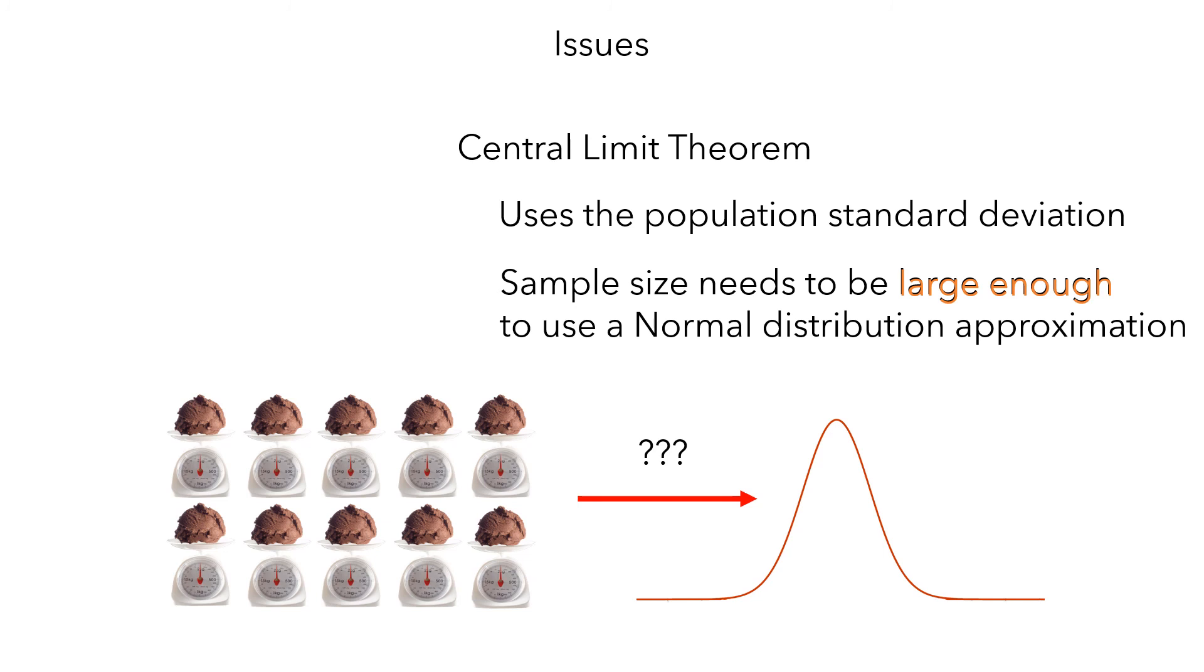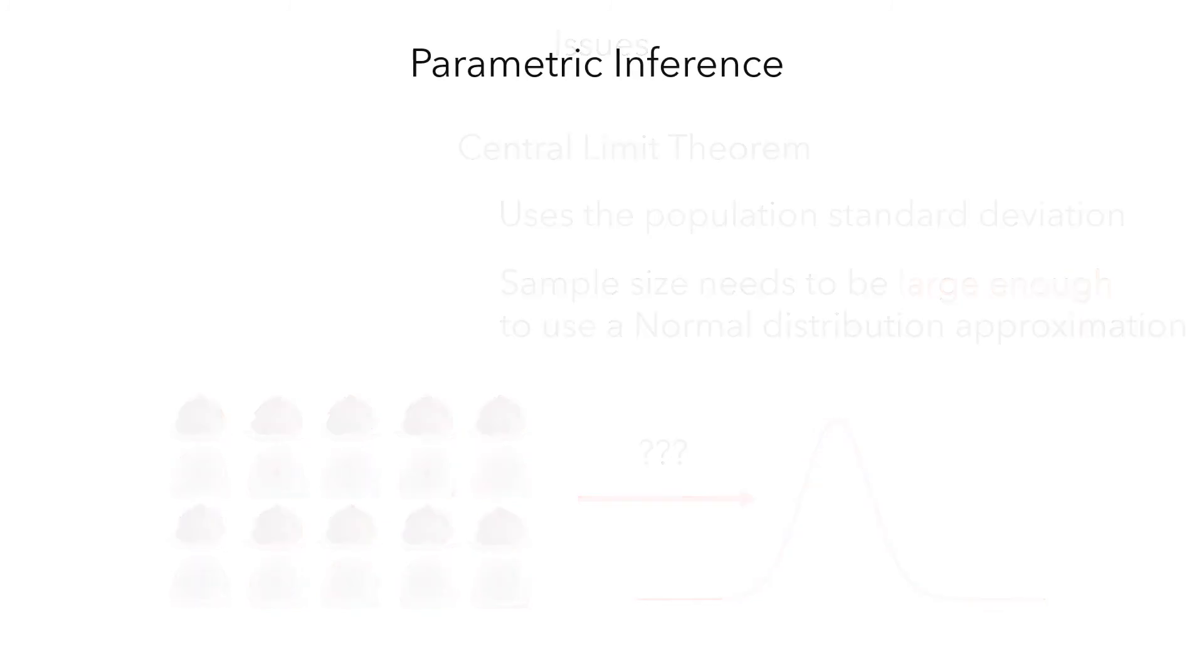Now, let's summarize what we've seen here. We looked at the idea of parametric inference, which is where you use formulas to create sampling distributions. These formulas depend on parameters like the mean, standard deviation, and degrees of freedom.